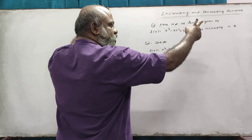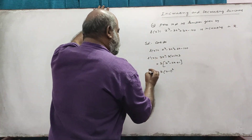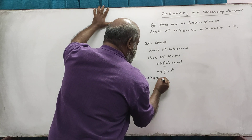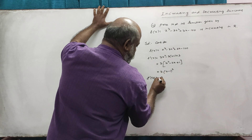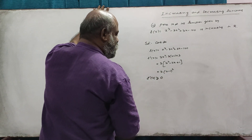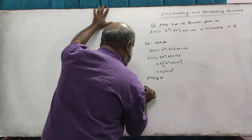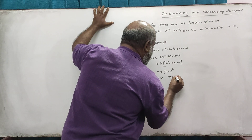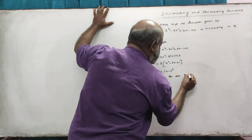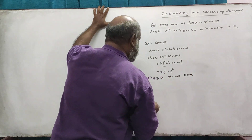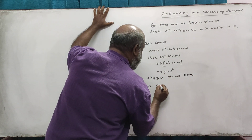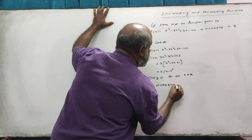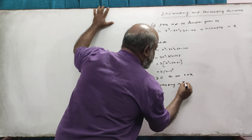Now, x minus 1 whole square is equal to 0, so f'(x) is equal to 0 when x is equal to 1, and x is equal to 0. Therefore, f is increasing for all x belonging to ℝ. So f is increasing in the real line ℝ.